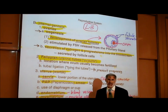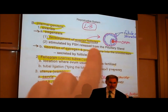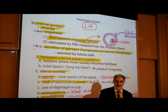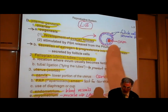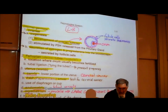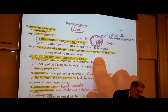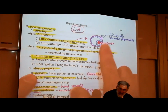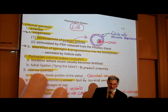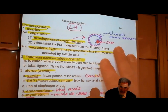The two functions of the ovaries: first is the development of ovarian follicles. An ovarian follicle is a structure containing the egg, or ovum. I've drawn a picture of an ovarian follicle — we'll see a better picture in a moment. Each ovarian follicle consists of an ovum surrounded by follicle cells.